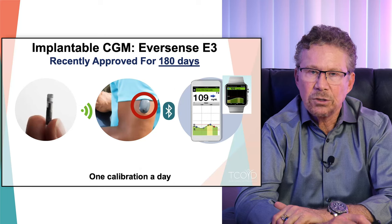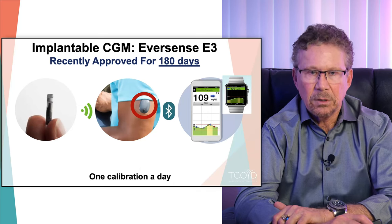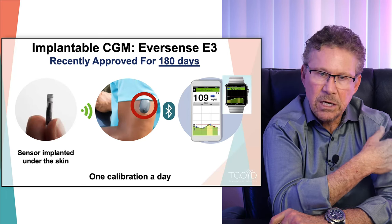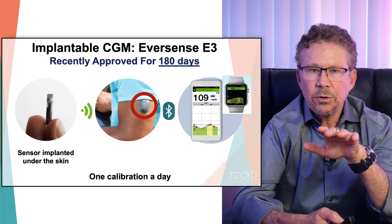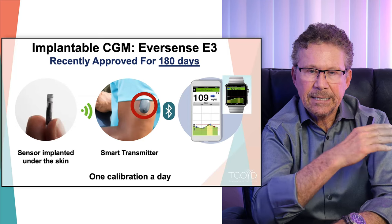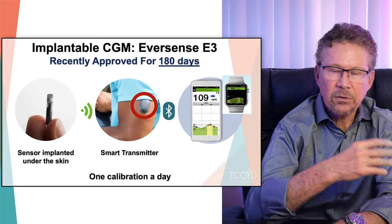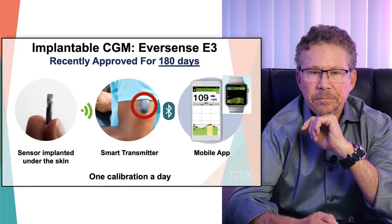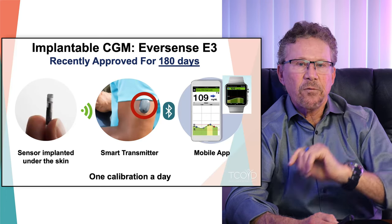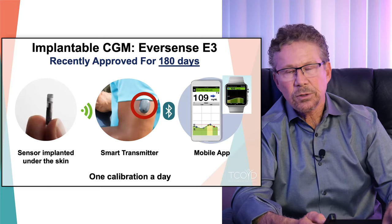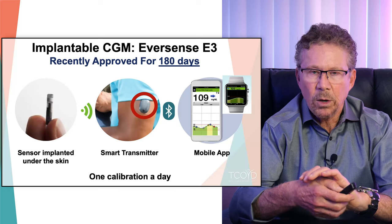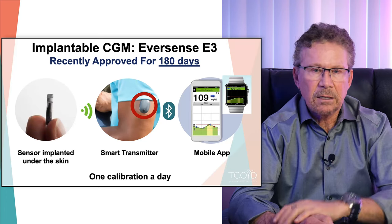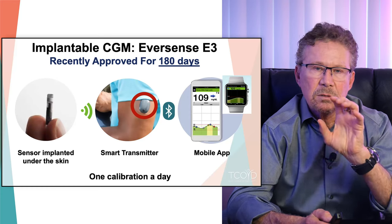What about the Eversense E3? Just got approved — this is the implantable continuous glucose monitor. That little sensor goes under the skin, usually in the arm, with about a 15-minute procedure. You wear SteriStrips for a day and take them off, then put the transmitter right over it with double-sided skin tape. That stays there for a day or two before you charge it with a USB. The information goes continuously to the iPhone or an Apple Watch, and once inserted, it stays for six months. It's personal choice — a lot of people don't want to deal with insurance and getting subcutaneous sensors every 10 days. This system still requires calibration once a day.